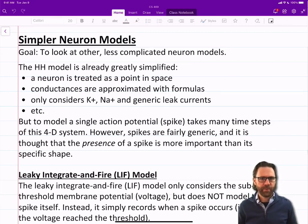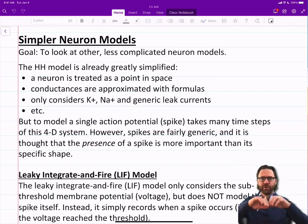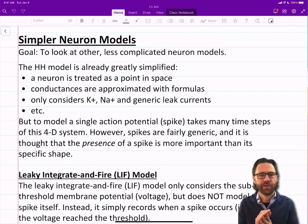I'd like to describe to you now a different neuron model. This one is simpler than the Hodgkin-Huxley neuron. So the goal here is to look at other less complicated neuron models. I'll actually go through a few that get simpler and simpler. The Hodgkin-Huxley model is already greatly simplified. It's treated as a point in space, the conductances are approximated with formulas, it only considers sodium, potassium, and generic leak currents, not calcium or astrocytes. So vastly simplified architecture.